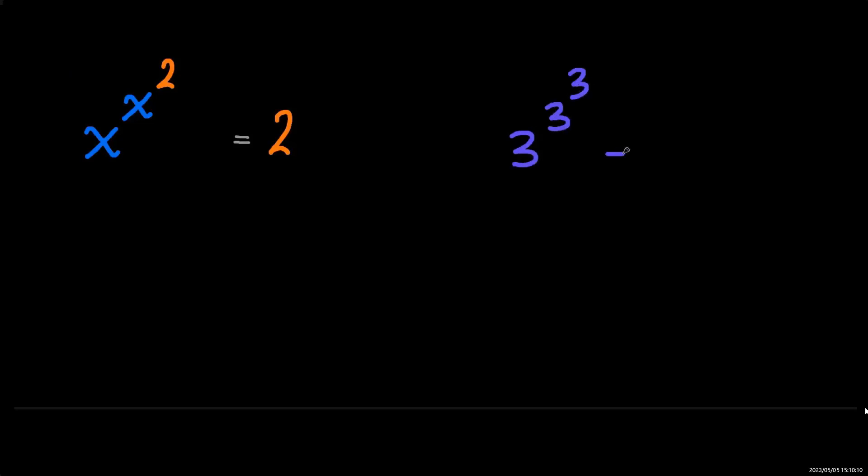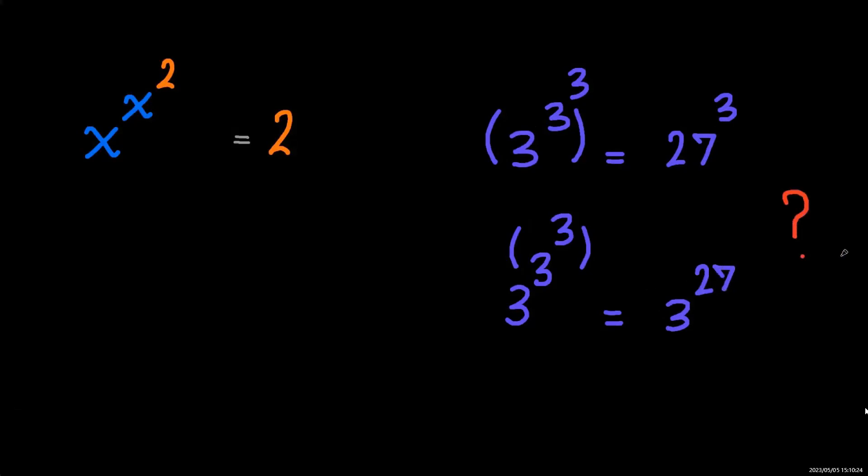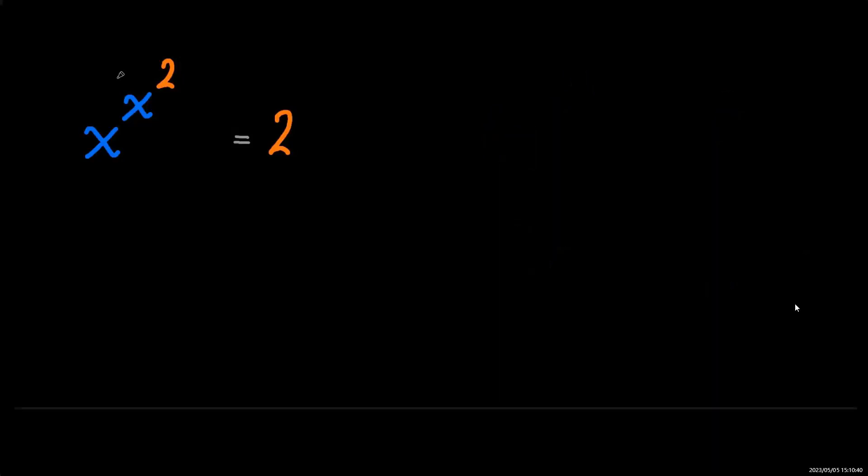Before we start, what's the value of 3 to the power of 3 to the power of 3? Are we going to start from bottom or go top down? The right value is 3 to the power of 27, meaning we need to go top down. We need to start from here, so I'll add parentheses because we know we're supposed to start from here.